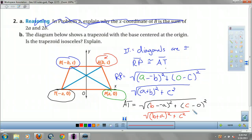So since RP equals AT, RAPT is an isosceles trapezoid. Okay?